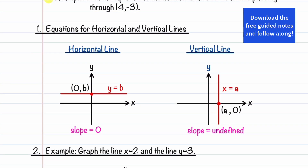Let's start by learning the basics of horizontal and vertical lines. A horizontal line looks like this, and it has a slope of zero. If a horizontal line passes through the point (0, b), then the equation of the horizontal line is written as y is equal to b.